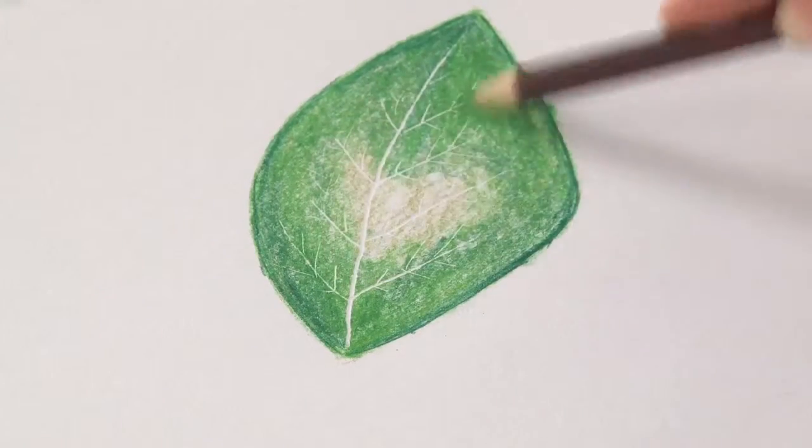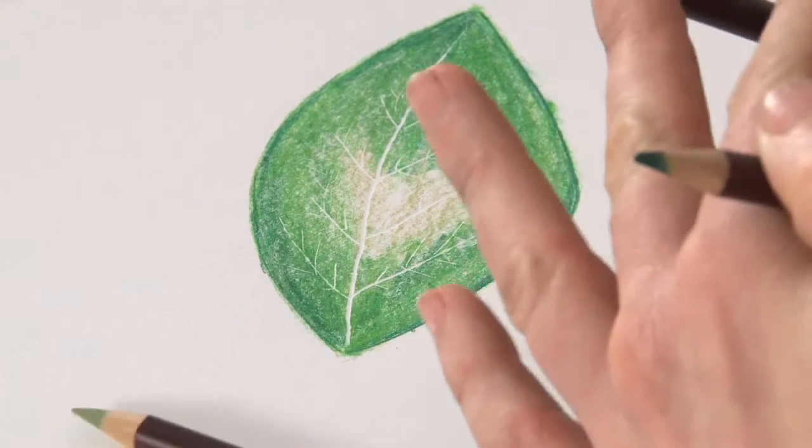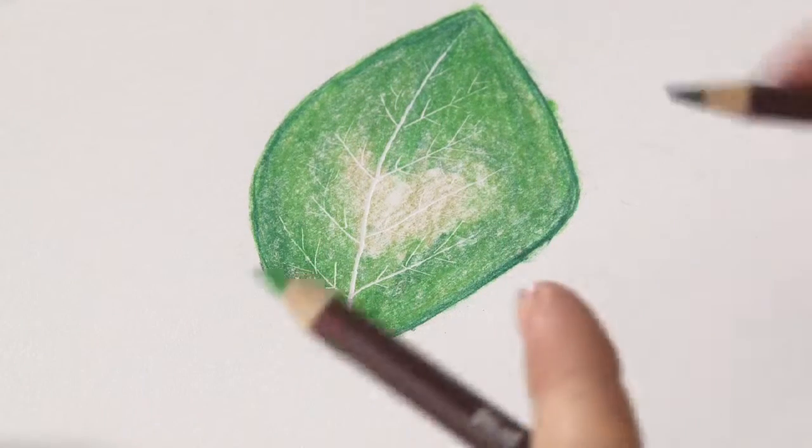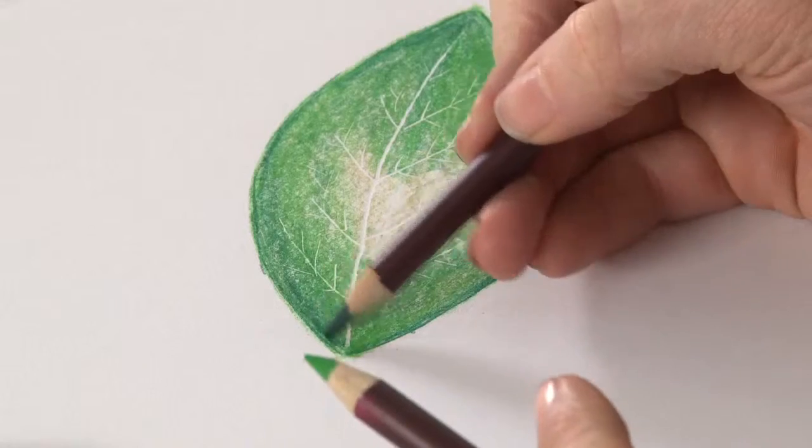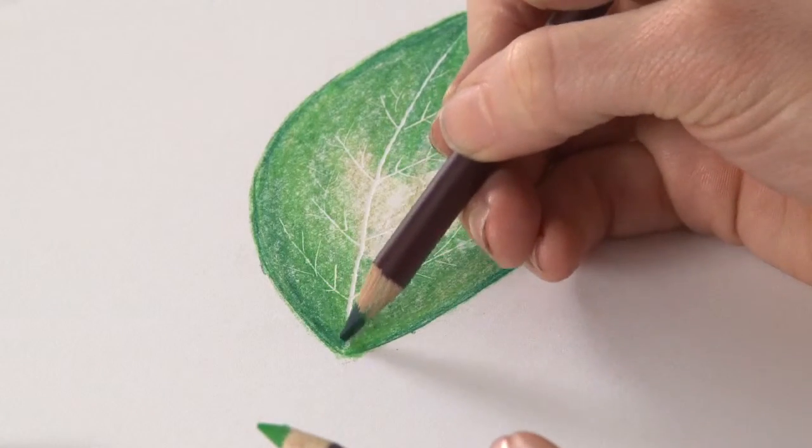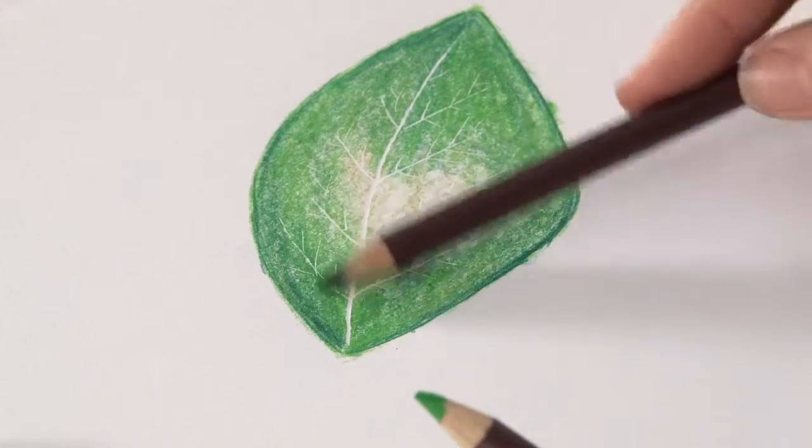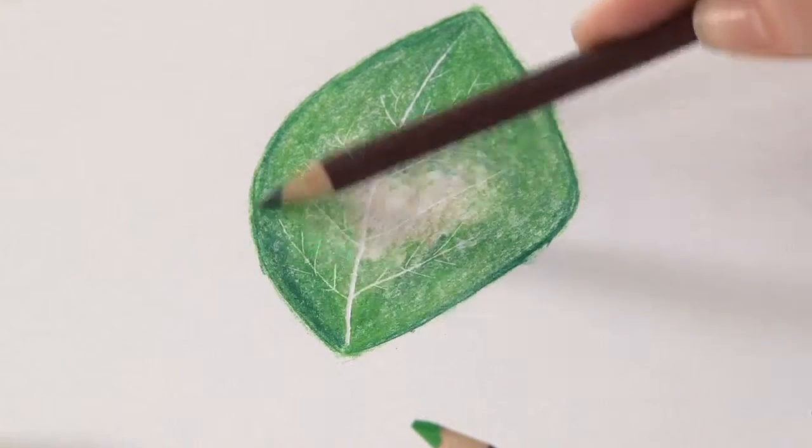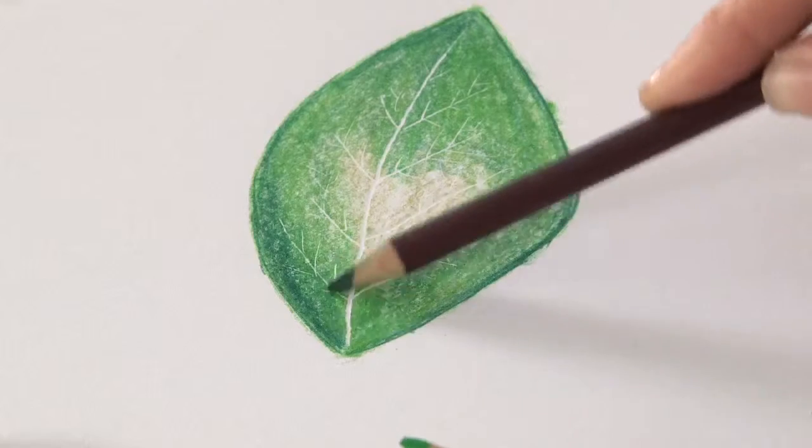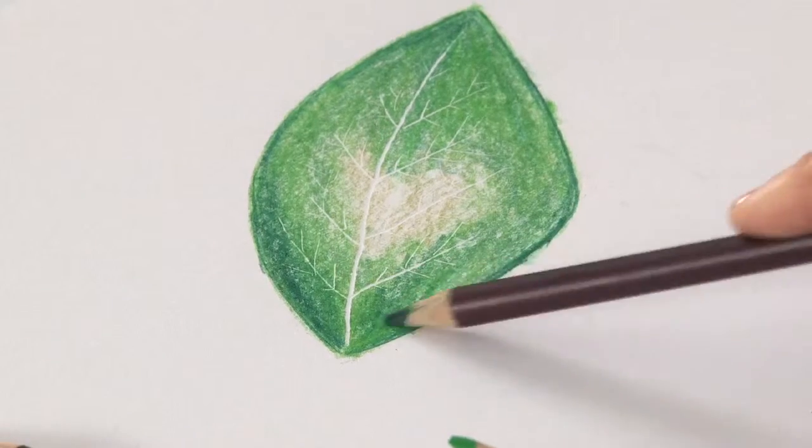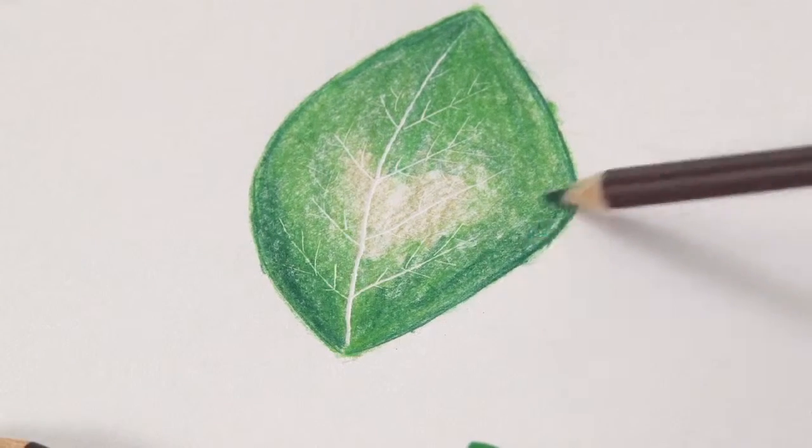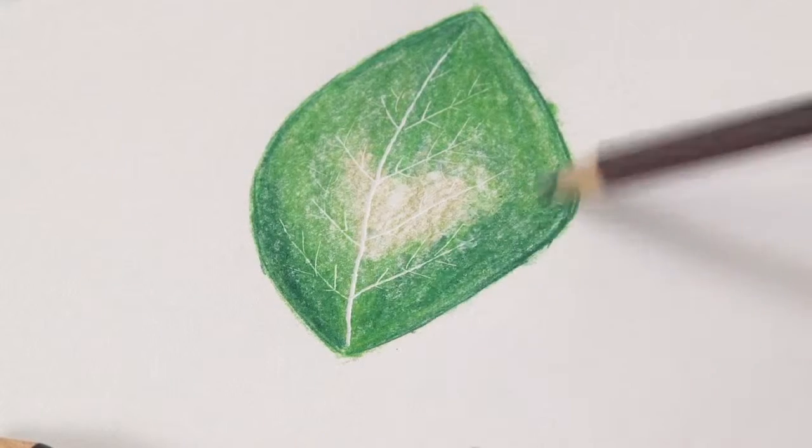I'm always using the pencils on their sides here, really just the edge part of the tip. Because if I start using the point then there's a danger that I'm going to go into one of the lines that we've put in, and all of a sudden that will be colored in green and you won't see the veins anymore. So that's why we're using the side of the pencil.